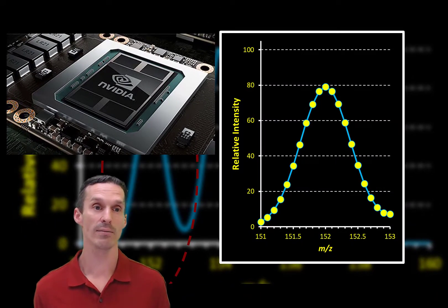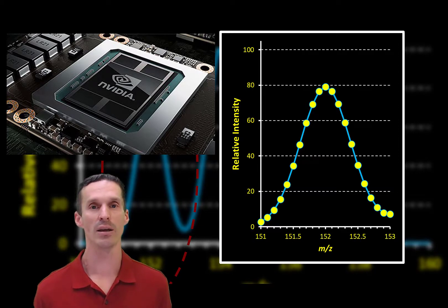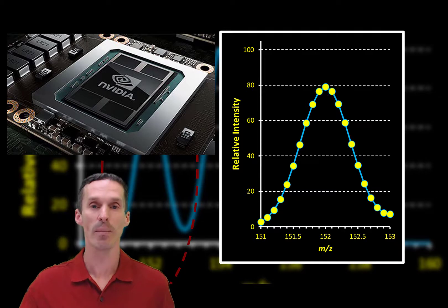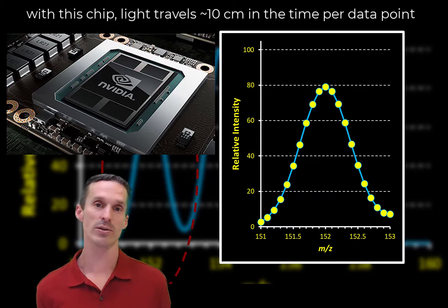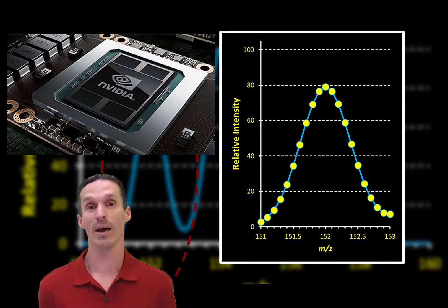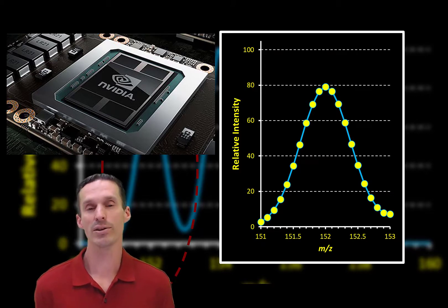Is this a problem today? Honestly, it isn't. The speed of processors today is always going to be fast enough to keep up with how fast a mass spectrometer needs to work. Back in the 60s and 50s, when we had old mass spectrometers, sure, that was a limitation, but now this isn't even an issue.